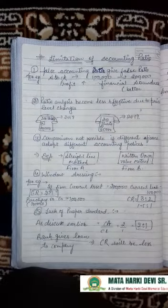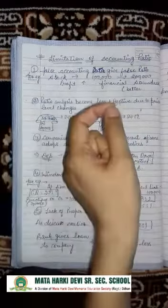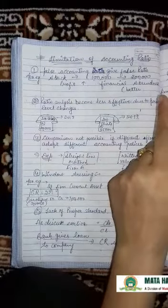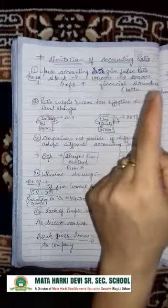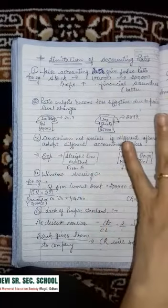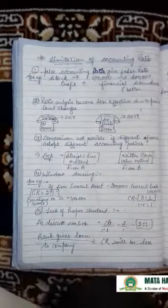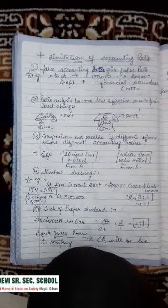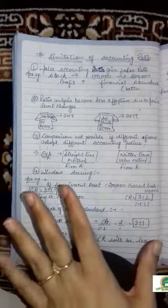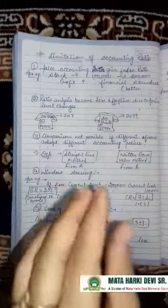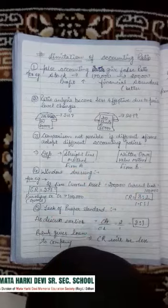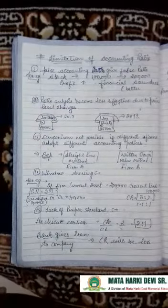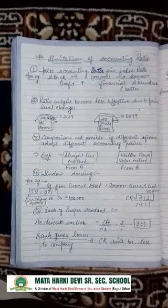For example, if the stock of the company is 1 lakh rupees and you are showing it in your financial statement as 2 lakh rupees, it will increase your profit and show the financial soundness of the company as better. If you show the closing inventories as overvalued, not only will profitability be overstated, but also the financial position will appear to be better. So if accounting data used is false, it will give you false ratios also.